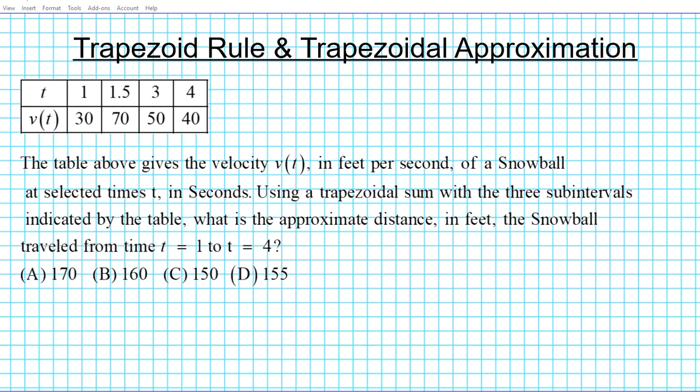So how do we use the trapezoid rule or trapezoidal approximation to estimate what a definite integral is? Let's take a look at this question. We have a table of values here at the time and the velocity for the given times.